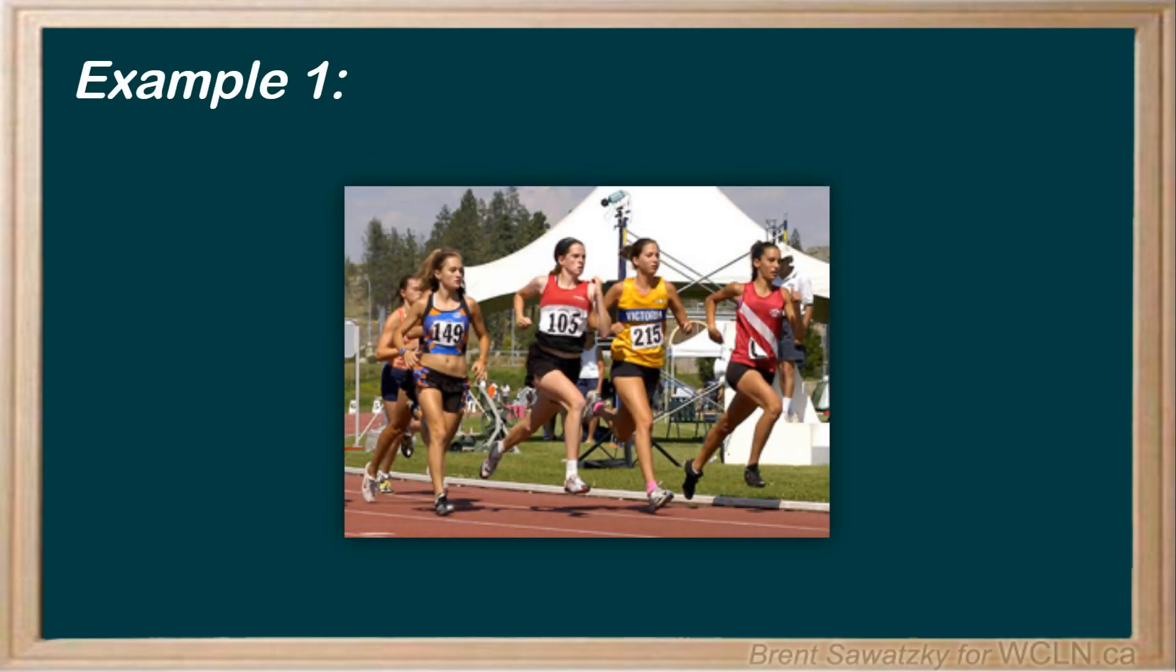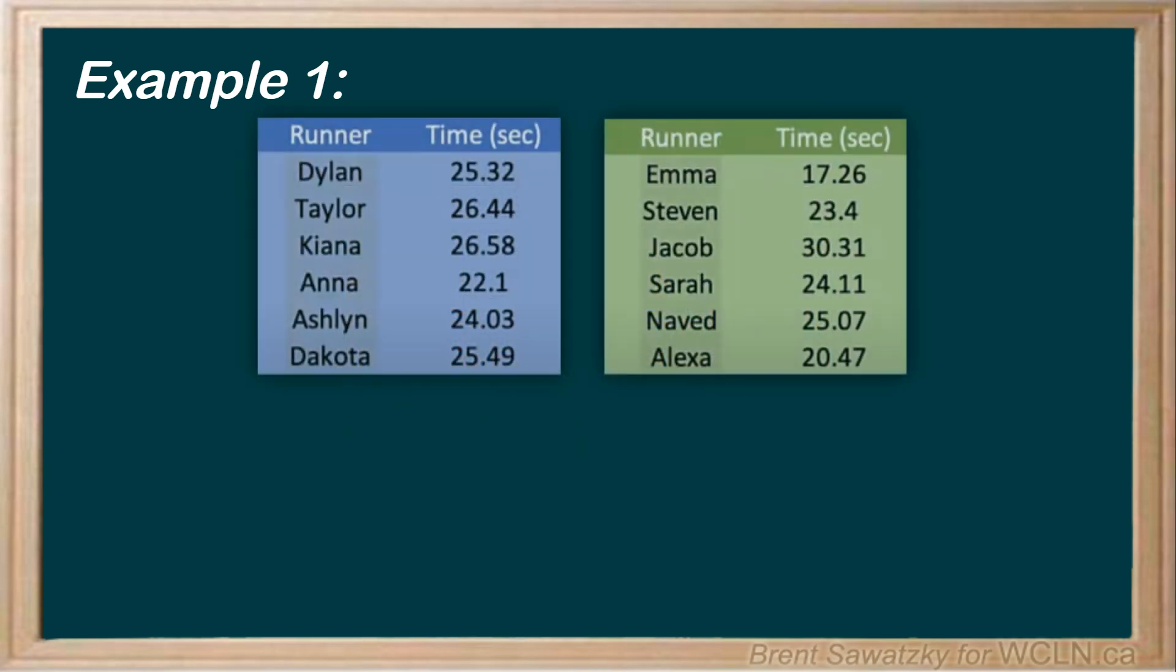Example 1. Two teams competed in a 200-meter sprint over the weekend. Both teams had six runners each in the race, and their times were recorded below. After the race, they argue over which team ran the better race. Well, how can we help determine this?